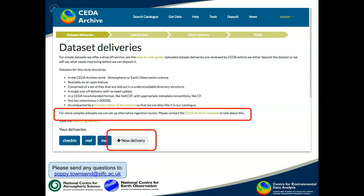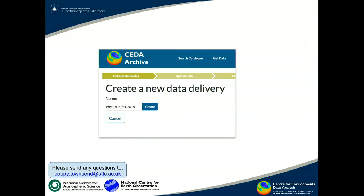Don't let that constrict you too much — it just means that we'll need to hear from you first. The next step is basically there's a new delivery button. So we're going to create a delivery. Clicking on that button takes you to a page which asks you to give it a simple name that we can use as a directory in our archive.